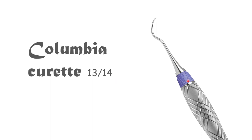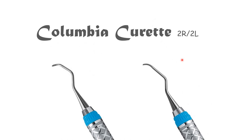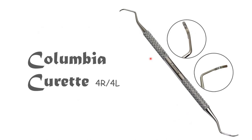These are general types of universal curettes available: the Columbia 13/14, the Columbia 2R/2L - you can see the shank angles and how the blade looks - and the Columbia 4R/4L, which has a somewhat thicker blade but the same structure as the universal curette.